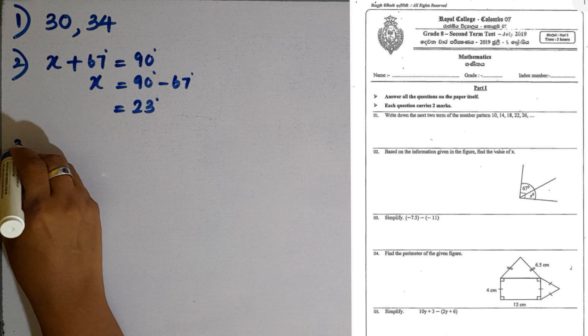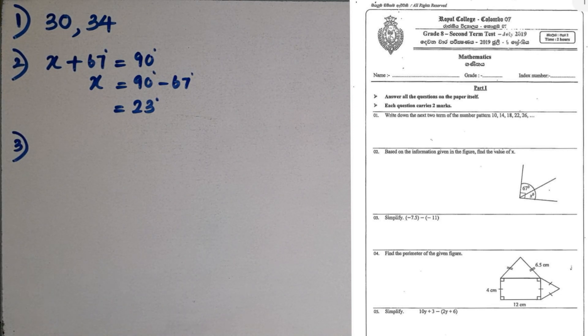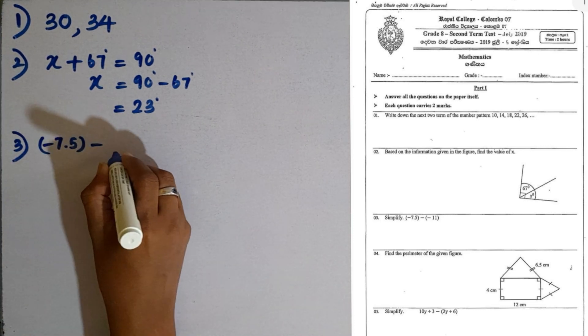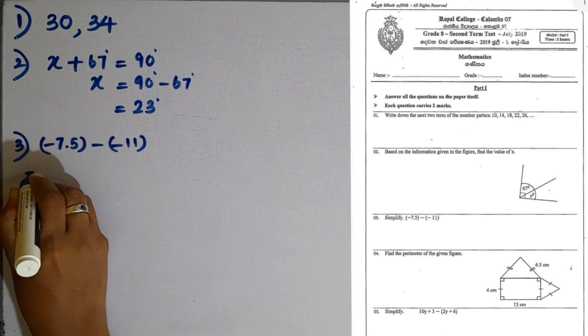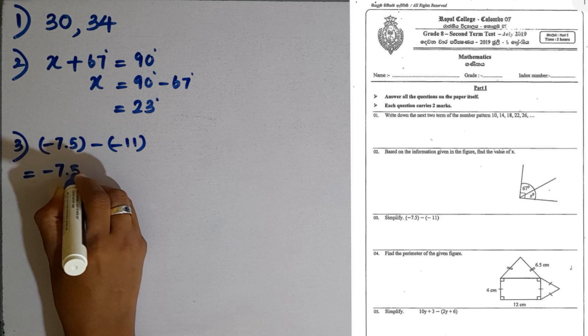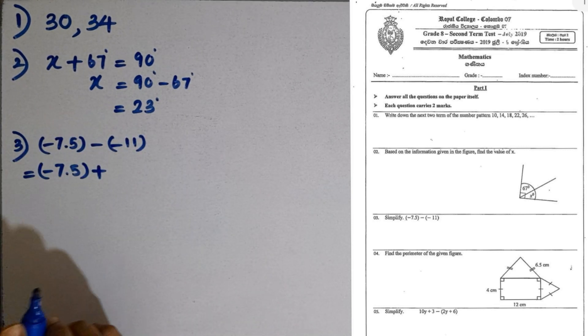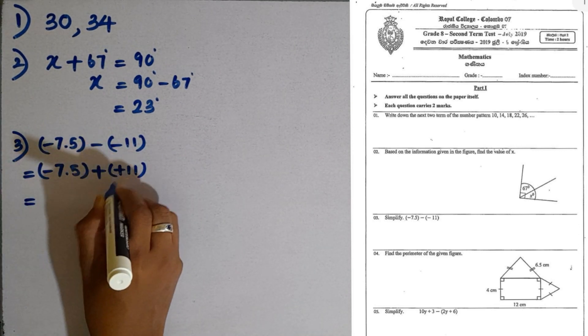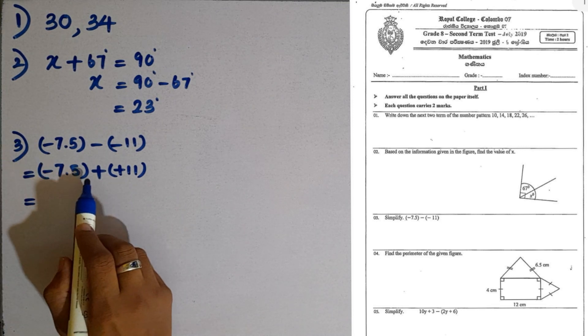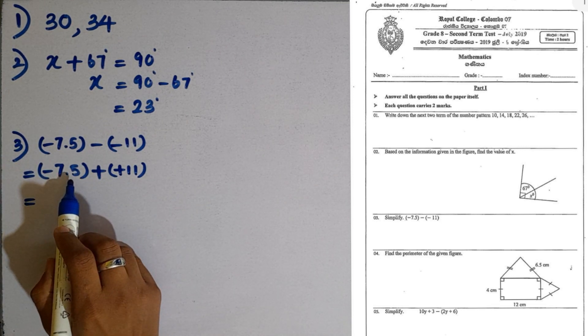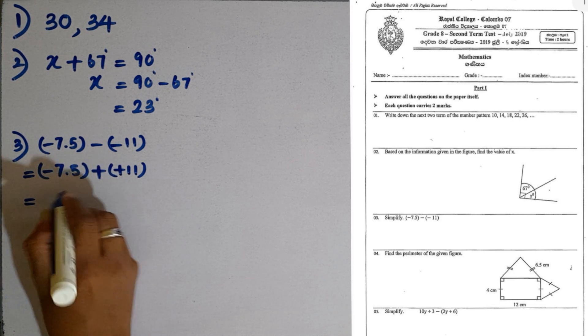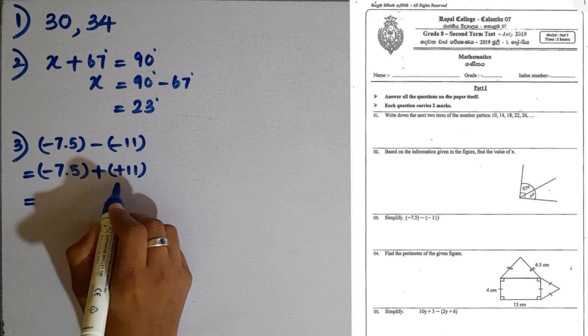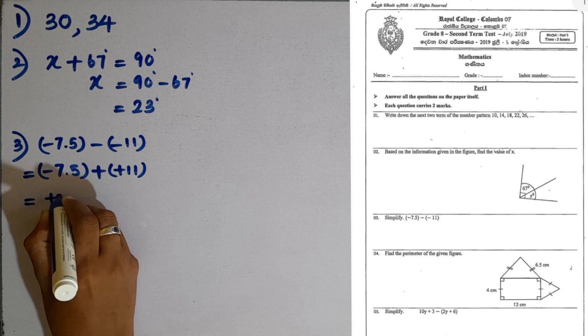Question number 3. Simplify minus 7.5 minus minus 11. We have to take the additive inverse of the second directed number. That is plus 11. So what is the difference? 11 minus 7.5. That is 3.5. The answer should contain the sign with the largest magnitude. So plus 3.5 is the answer.